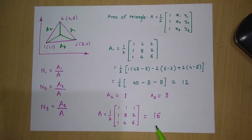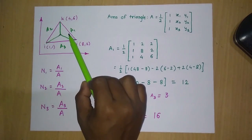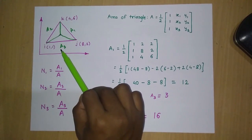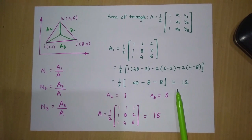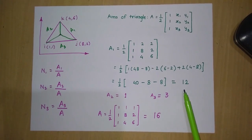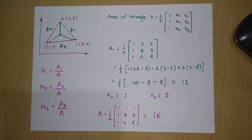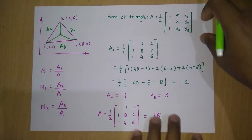As a verification check: the total area A must equal the sum of A1, A2, and A3. Indeed, 12 + 1 + 3 = 16, which matches our total area. This confirms our calculations are correct.